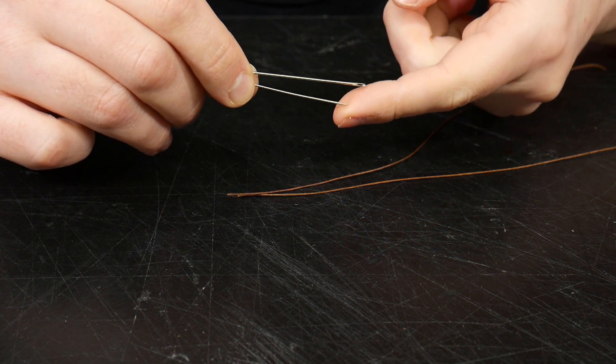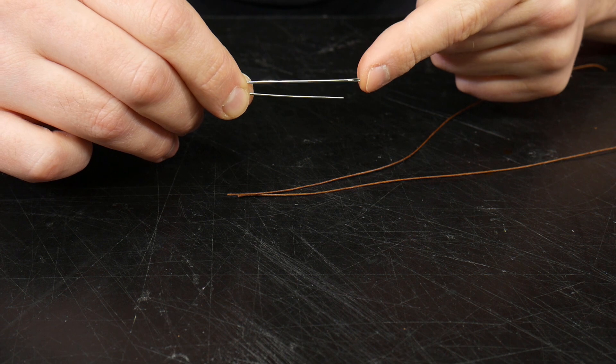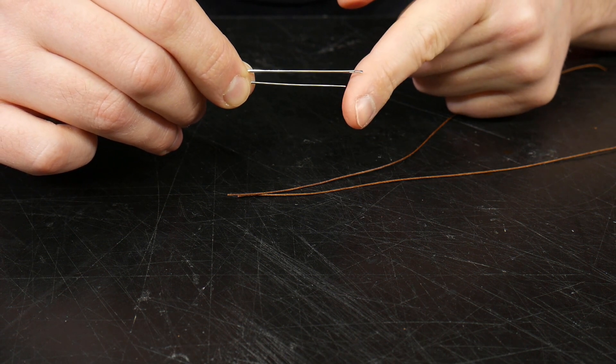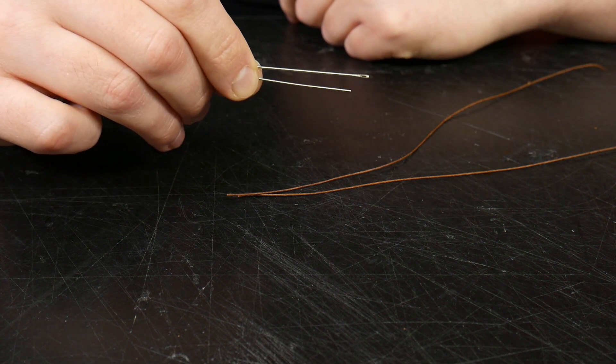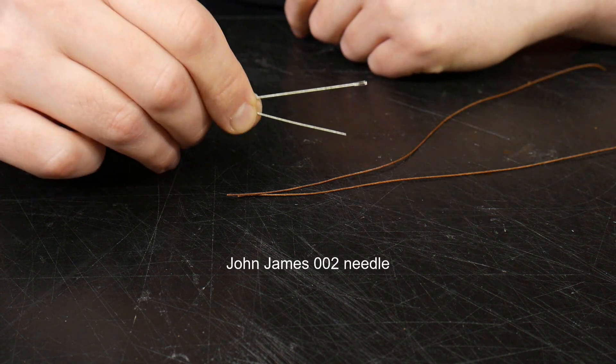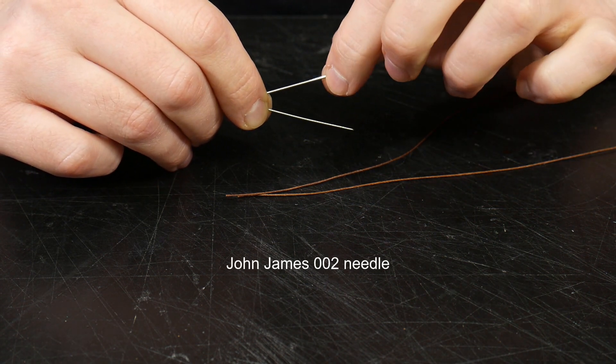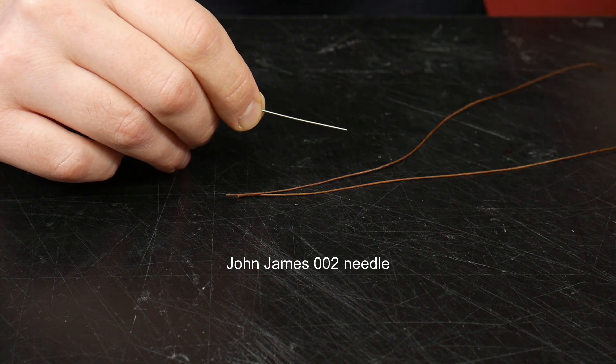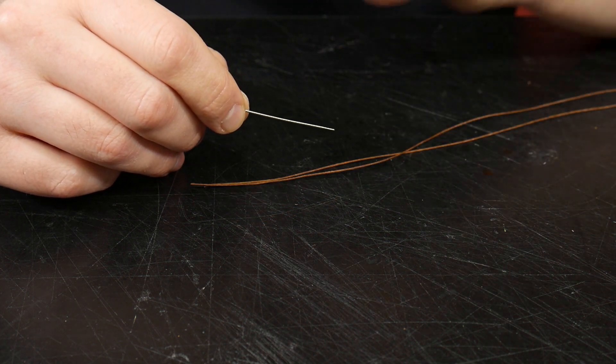So ideally, unless you really need the extra length afforded by a larger needle, you want to switch to the smallest needle that you can possibly use. This is a John James 002, great needle, but you're going to need a very large awl with thick thread as well.